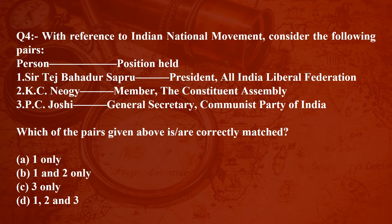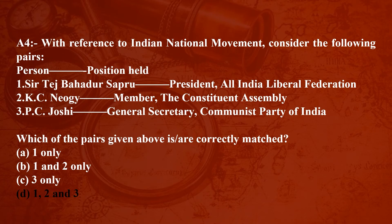Question number four: With reference to the Indian national movement, consider the following pairs of person and position held. One: Tej Bahadur Sapru — President, All India Liberal Federation. Two: K.C. Neogi — Member, Constituent Assembly. Three: P.C. Joshi — General Secretary, Communist Party of India. Which of the pairs is/are correctly matched? Option A: one only; Option B: one and two only; Option C: three only; Option D: one, two and three. The answer is Option D — one, two and three.